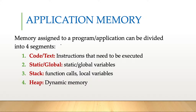Memory assigned to a program or application is basically divided into four segments: code segment, static segment, stack, and heap. The code segment stores the instructions that need to be executed. The static and global segment maintains static or global variables whose lifetime spans the entire lifetime of the application. The stack keeps track of function calls and local variables. Finally, heap is used for dynamic memory when we need a large chunk of memory and the size is not known at compile time.